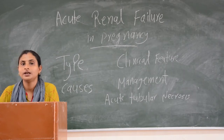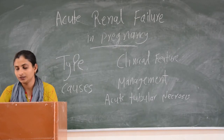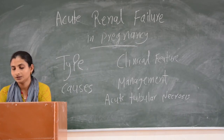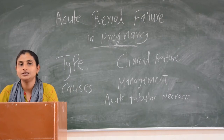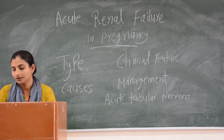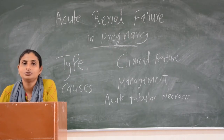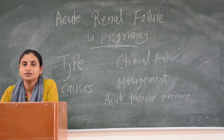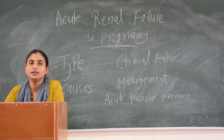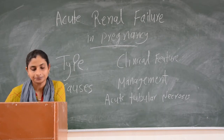In acute tubular necrosis, blood flow to the kidneys is decreased. The patient may present with fever and chronic illness signs. Shock and oxygen deficiency may be seen. On urine examination, findings may appear relatively normal, and renal tubular cells may be seen.